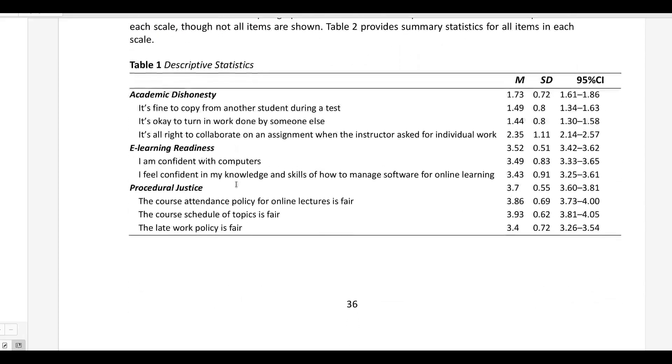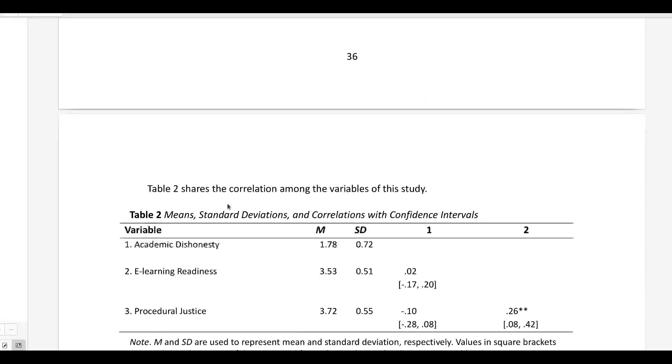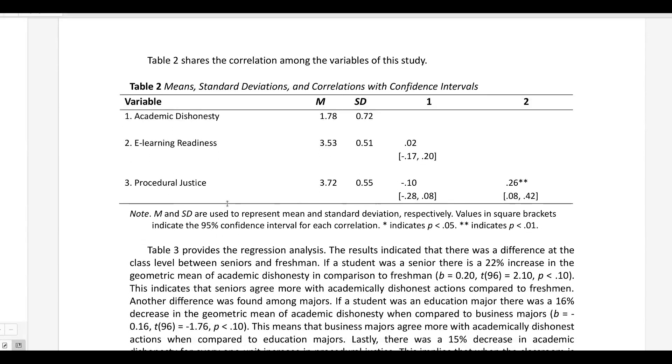Now here, I actually put in a table because I have the space to do that. And these are the things that I talked about in the paragraph. So they're kind of supporting each other because some people, they like the numbers in the paragraph. Some people don't. And then also I have another table here that shares the correlations and the standard deviation and means of the overall variables, not just individual items.